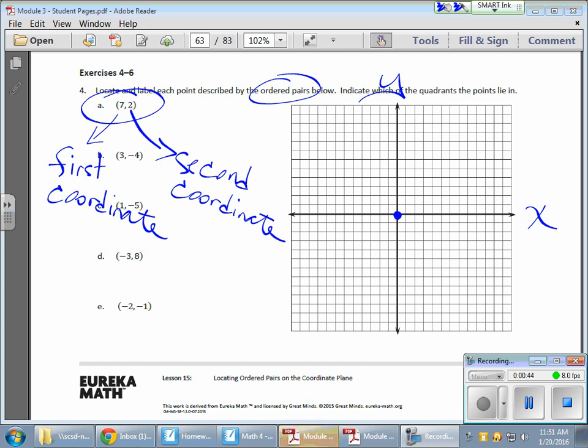Zero for both the x and the y, right smack in the middle here, and this is called the origin, which is zero comma zero. So it's zero on the x and zero on the y.